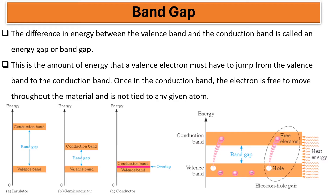The band gap is basically the difference in energy between the valence band and the conducting or conduction band.